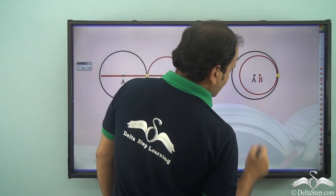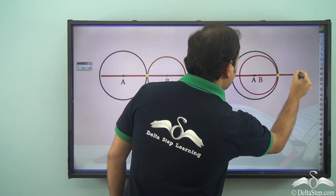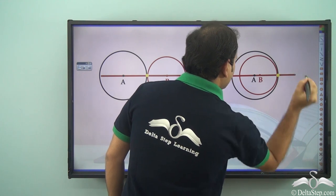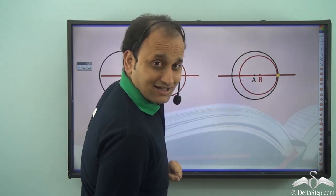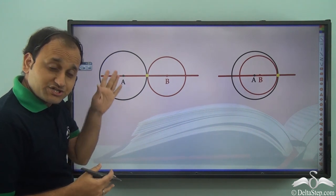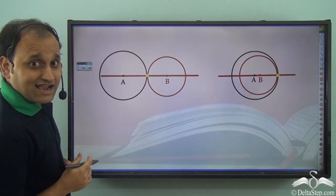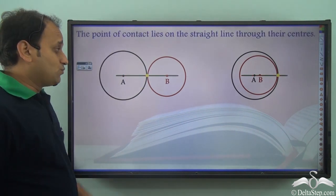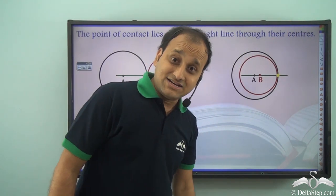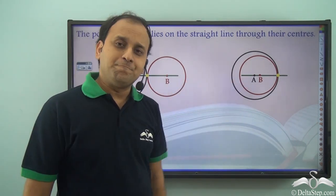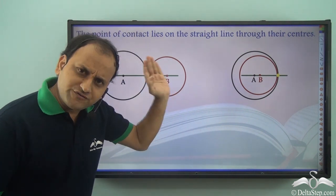Again, with a line that passes through the centers of both circles which touch internally, we see that the line passes through the common point of contact. So we can say that the point of contact lies on the straight line through their centers. But this is just our observation — can we really prove this particular fact?